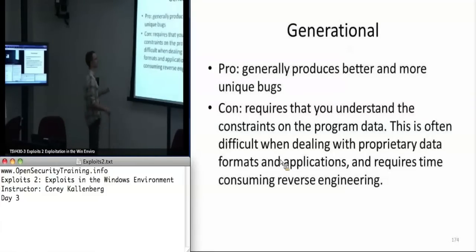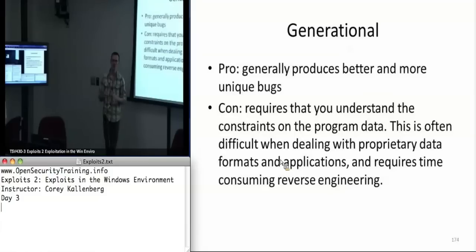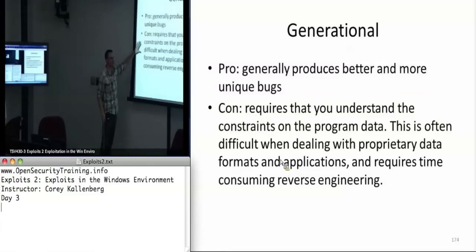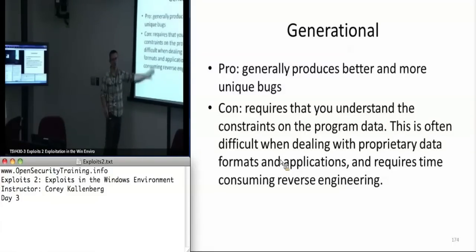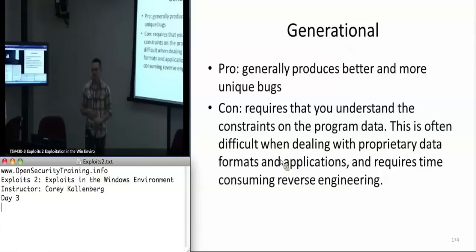Generational fuzzing is good because it generally produces better bugs. When you really understand the document format, you can hit all the corner cases precisely. The con is you have to understand the complete specification of what you're fuzzing, which is often difficult. Most of the time we're fuzzing proprietary applications where the specification might not be known, so you'd have to spend a lot of time reverse engineering it. If it's an open specification, this becomes more tractable. But in general, this approach yields better bugs than mutational fuzzing.